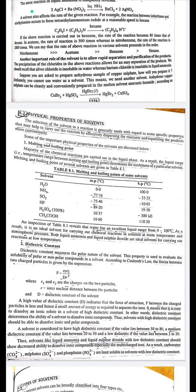Both liquid ammonia and liquid sulfur dioxide are ideal solvents for carrying out reactions at low temperature. Second, dielectric constant: the dielectric constant measures the polar nature of the solvent and is used to evaluate the solubility of polar or non-polar compounds.